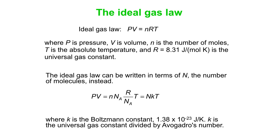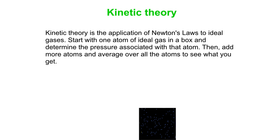K is the Boltzmann constant, and it is the universal gas constant divided by Avogadro's number. So, it's 1.38 times 10 to the minus 23 joules per Kelvin. Okay, now what's kinetic theory? Well, it's the application of Newton's laws to ideal gases.